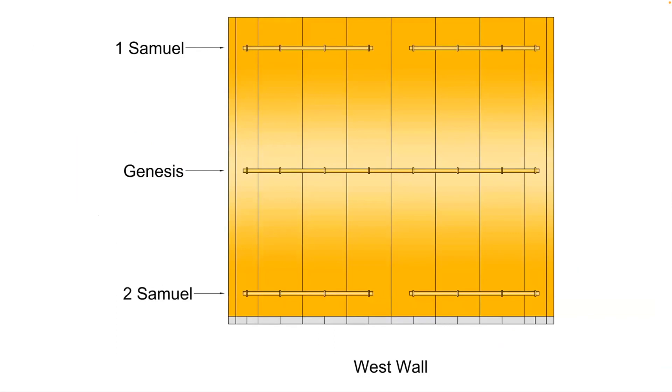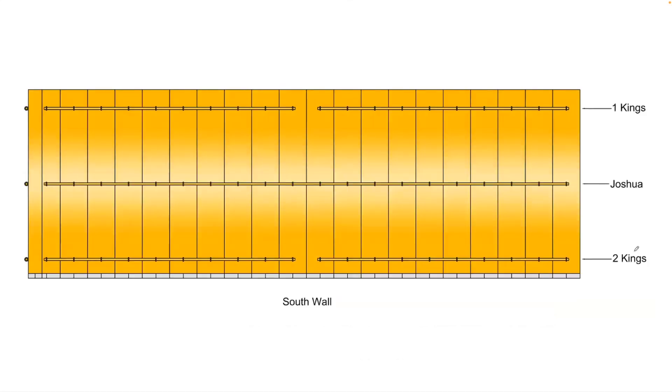The west wall, having Genesis in the center as the single bar, and First and Second Samuel as the upper and lower rows of bars. It's almost like God is saying: First Samuel, part one of two, and Second Samuel, part two of two. The south wall, having Joshua as the center bar, and First and Second Kings as the upper and lower rows.